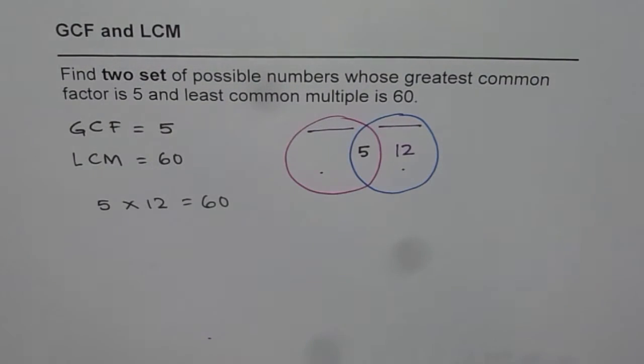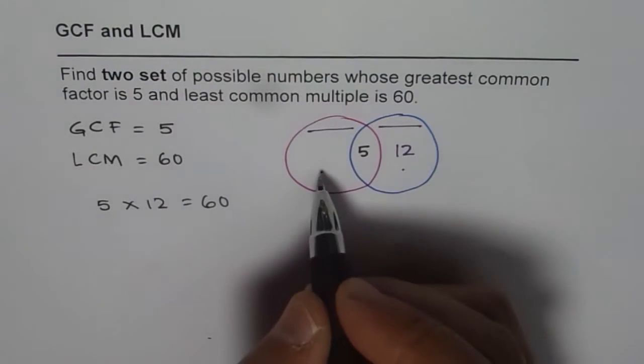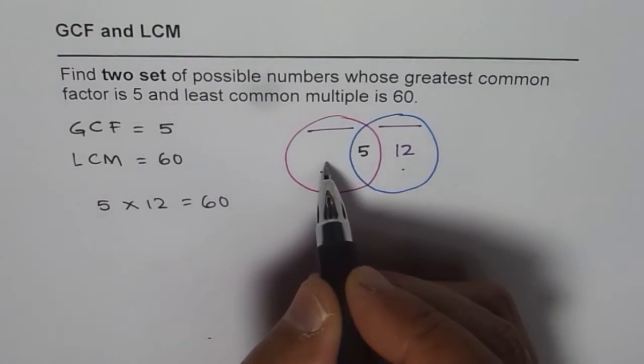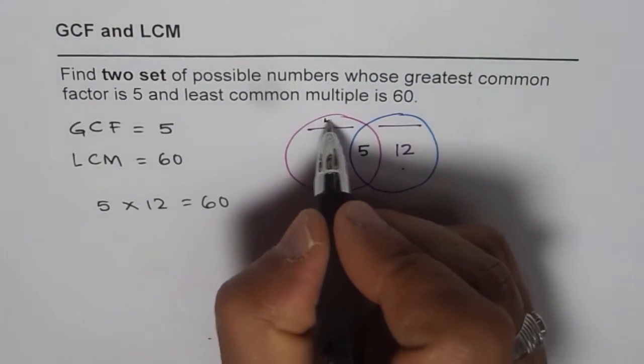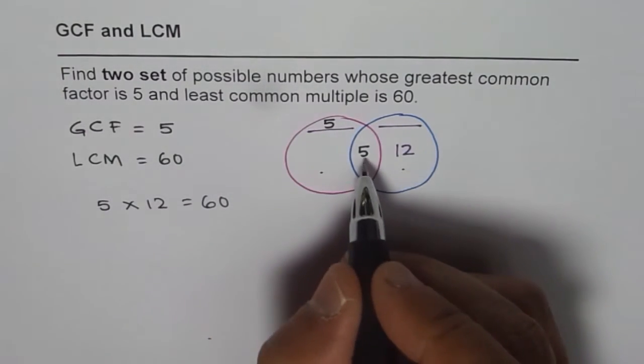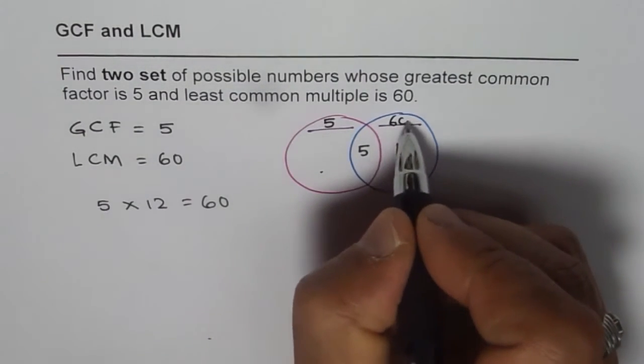Now this set of numbers is what? 5, that means no other factor here except for 1. So this number should be 5 and the other number should be 5 times 12 is 60.